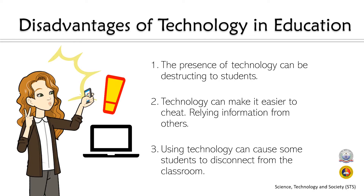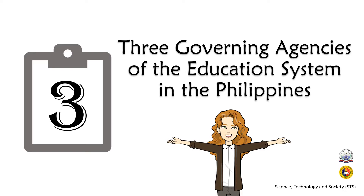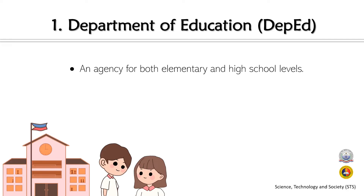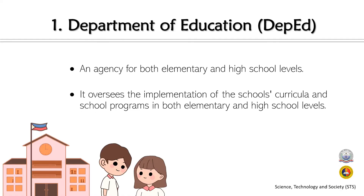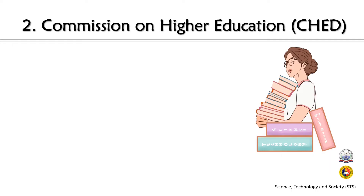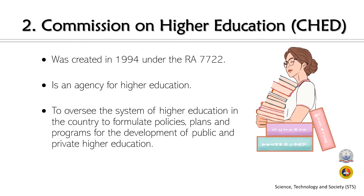In line with science education in the Philippines, we will now discuss the three governing agencies of the education system. First is the Department of Education, or DepEd, an agency for both elementary and high school levels that oversees the implementation of school curricula and programs, headed by Dr. Leonor Liling M. Briones. The other is the Commission on Higher Education, or CHED, created in 1994 under Republic Act 7722, overseeing higher education and formulating policies, plans, and programs for public and private higher education.